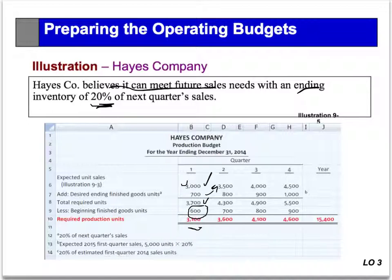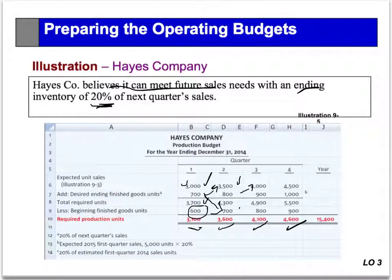We start the second quarter — we need $3,500 for sales, and we also need 20% of next quarter, so it's 20% of $4,800. Our total needs are $4,300. But recall, the ending inventory at the end of quarter one is the beginning inventory for quarter two. And this way, we work ourselves right through the whole year, determining exactly what we need to produce to meet the sales budget and management's policy.